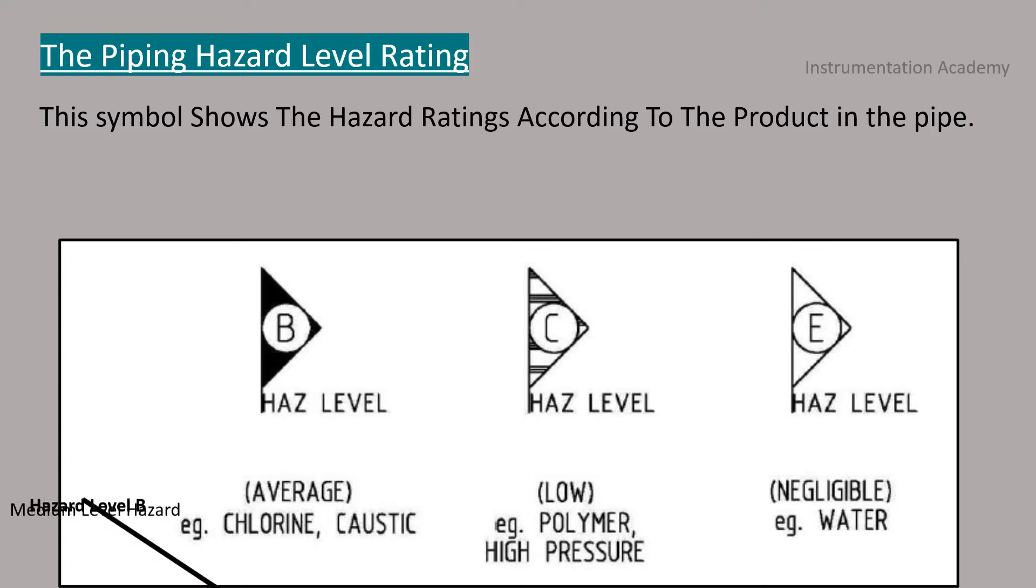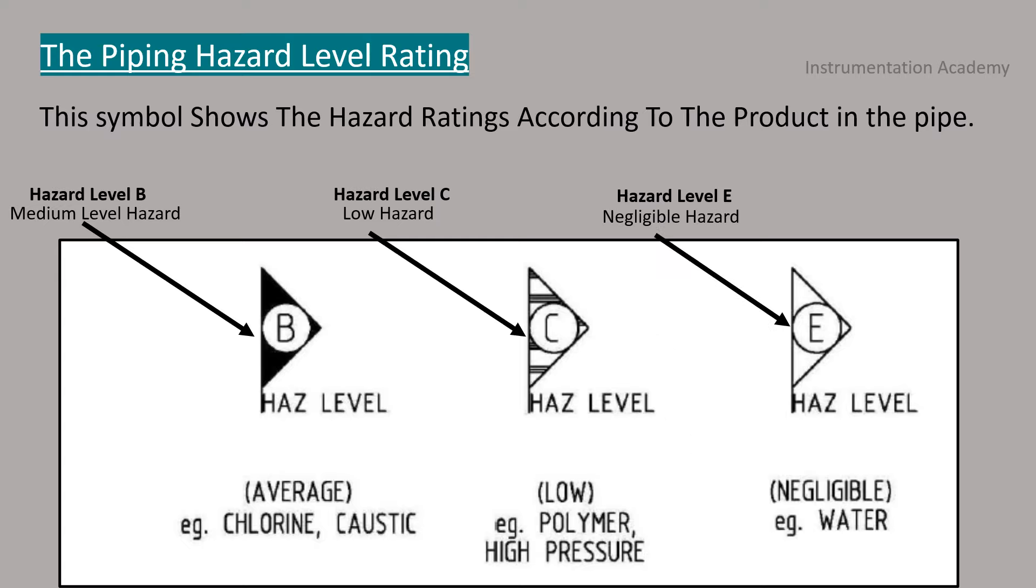Hazard level B indicates the pipe which carries medium level hazard product. Hazard level C indicates the pipe which carries low level hazard product. And hazard level E indicates the pipe which carries negligible hazard level product.